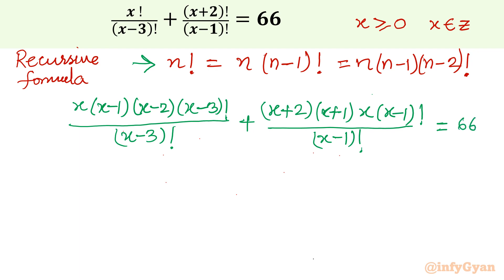Now I will cancel x minus 1 factorial with x minus 1 factorial, and x minus 3 factorial with x minus 3 factorial. What is left? x times x minus 1 times x minus 2 plus x plus 2 times x plus 1 times x equal to 66.